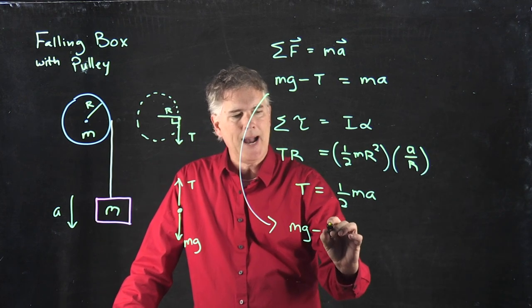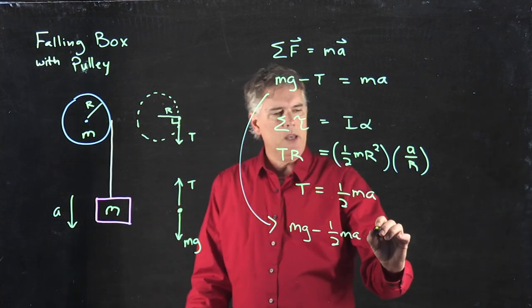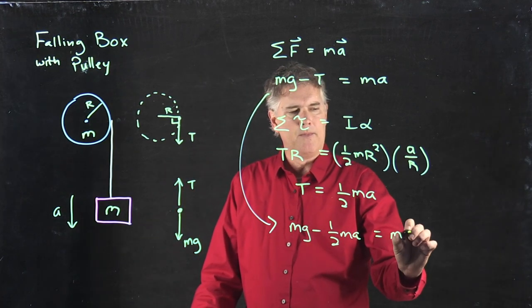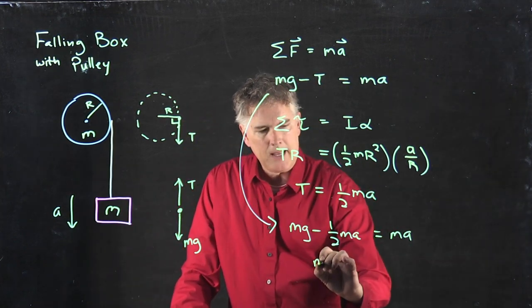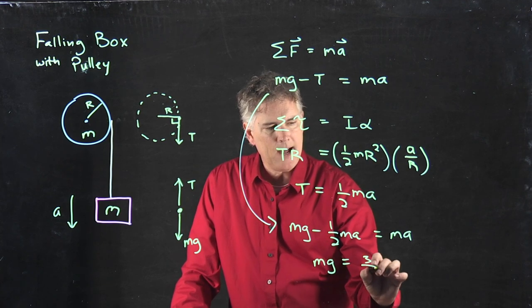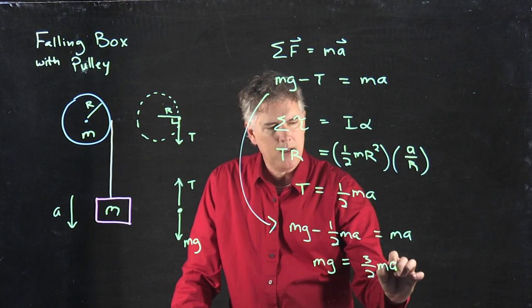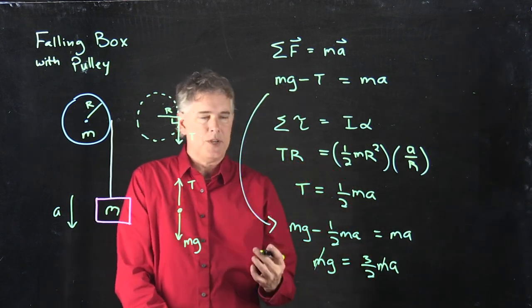And so now I can go back to this equation right here. We had mg minus T equals mA. So we get mg minus one-half mA equals mA. I'm going to add this to the other side. And I get mg equals three-halves mA. I can cross out the m's. And I'm done with the problem.